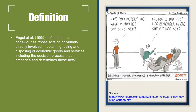Engel et al. (1995) defined consumer behavior as those acts of individuals directly involved in obtaining, using, and disposing of economic goods and services, including the decision process that precedes and determines those acts. Simply put, it speaks of decisions or thought processes of individuals — that is, consumers — to buy, use, and dispose of economic goods and services that they pay for.